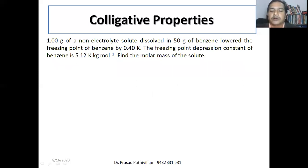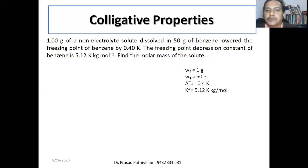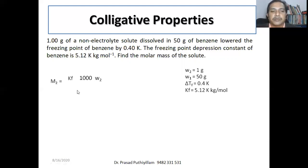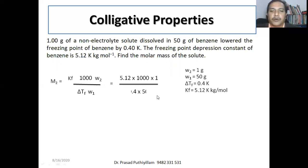1 gram of non-electrolyte solute dissolved in 50 gram of benzene lowers the freezing point of benzene by 0.40 K. KF of benzene = 5.12 K·kg/mol. Find the molar mass of the solute. Given: w2 = 1 g, w1 = 50 g, ΔTF = 0.4 K. M2 = KF × 1000·w2 / (ΔTF × w1) = 5.12 × 1000 × 1 / (0.4 × 50) = 256 g/mol.